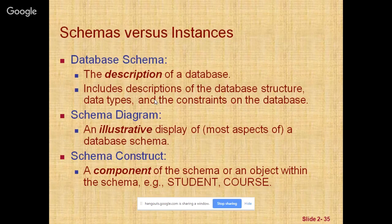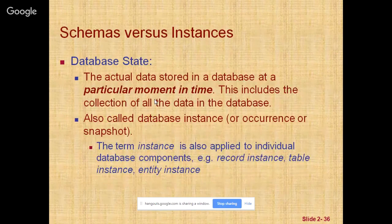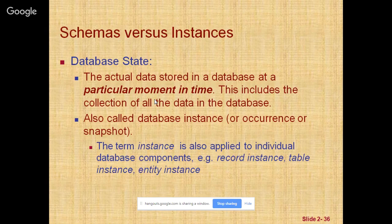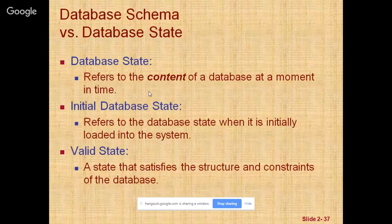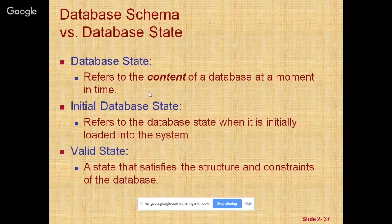The data in the database at a particular moment in time is called a database state or a snapshot. It is also called the current set of occurrences or instances in the database. Database state refers to the content of a database when it is initially loaded into the system, and a state that satisfies the structure and constraints of that database is called a valid state.